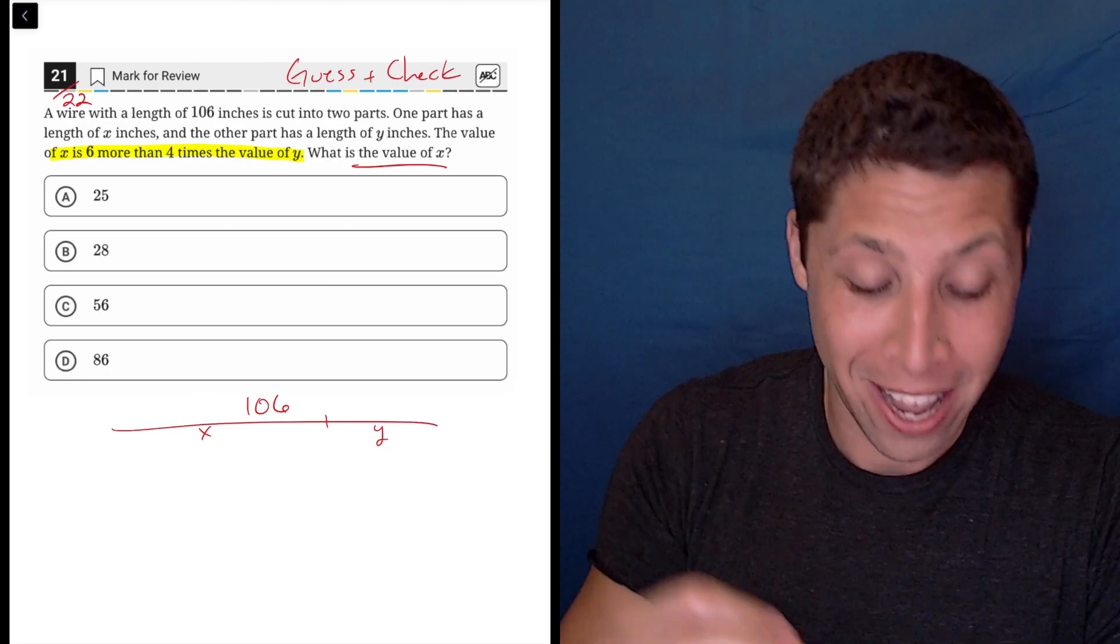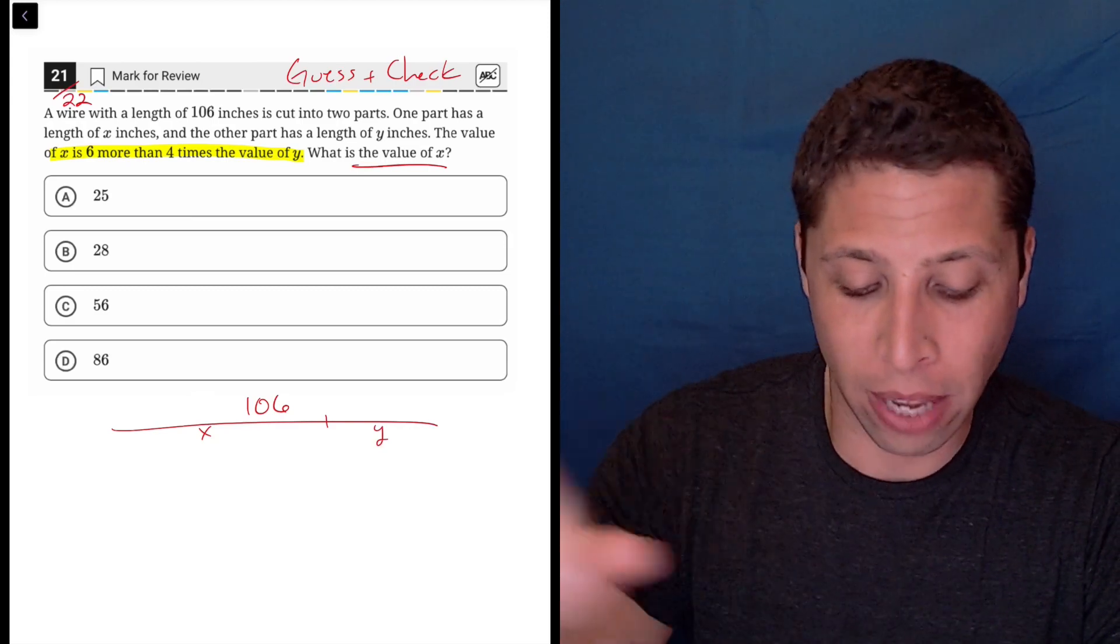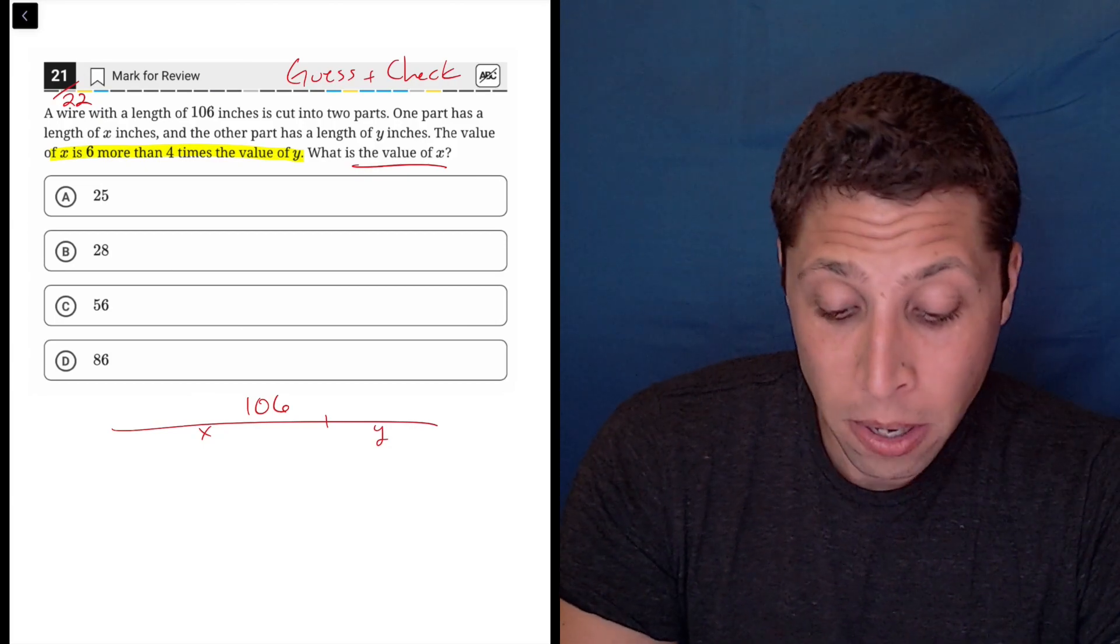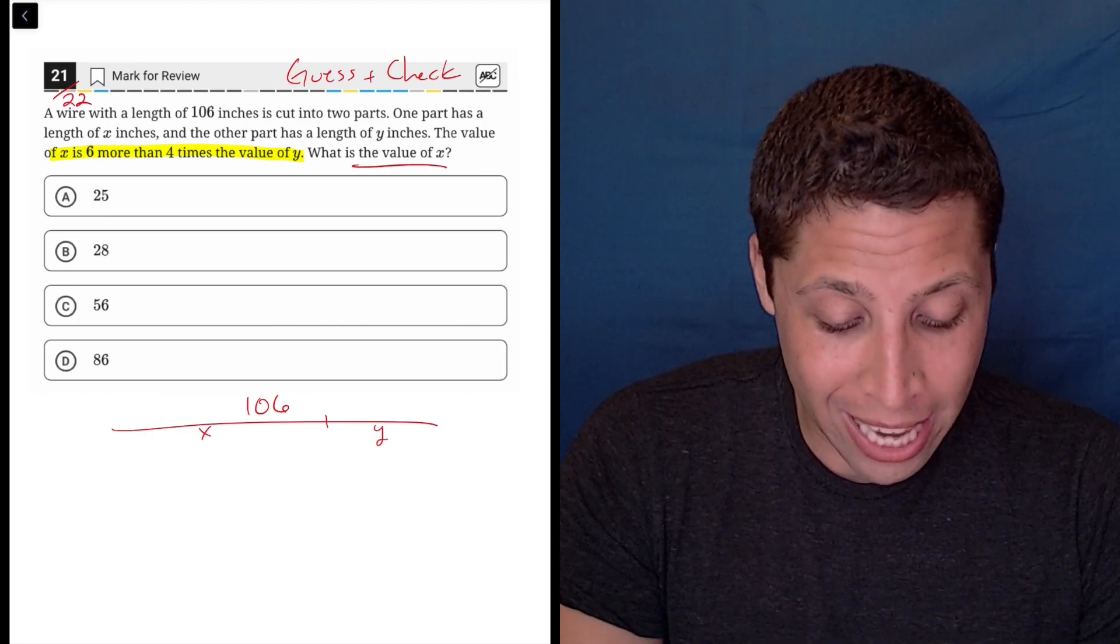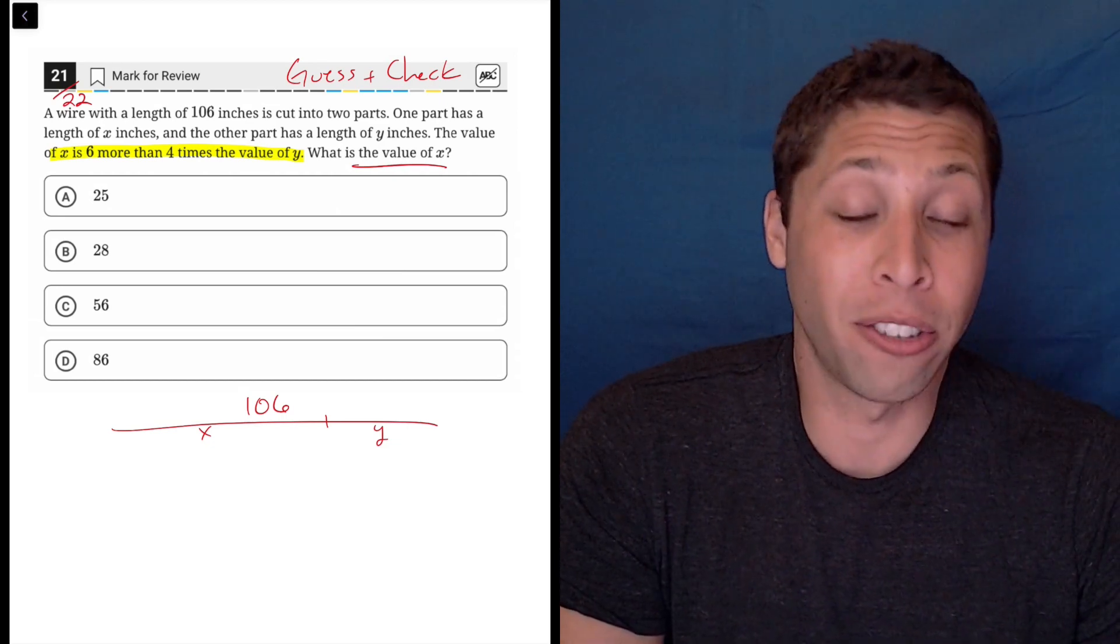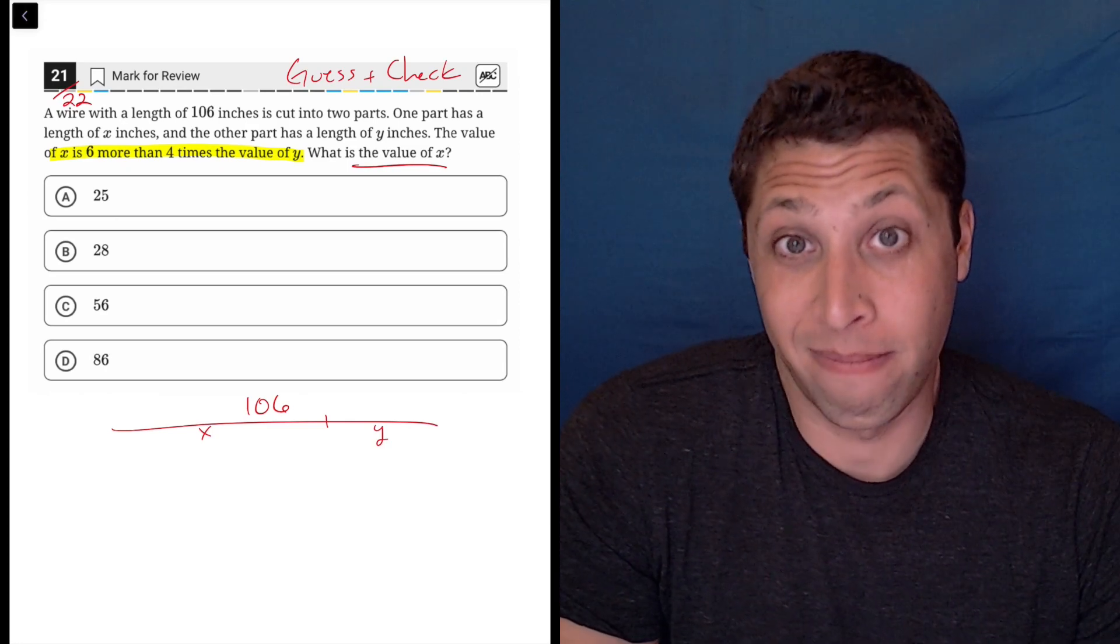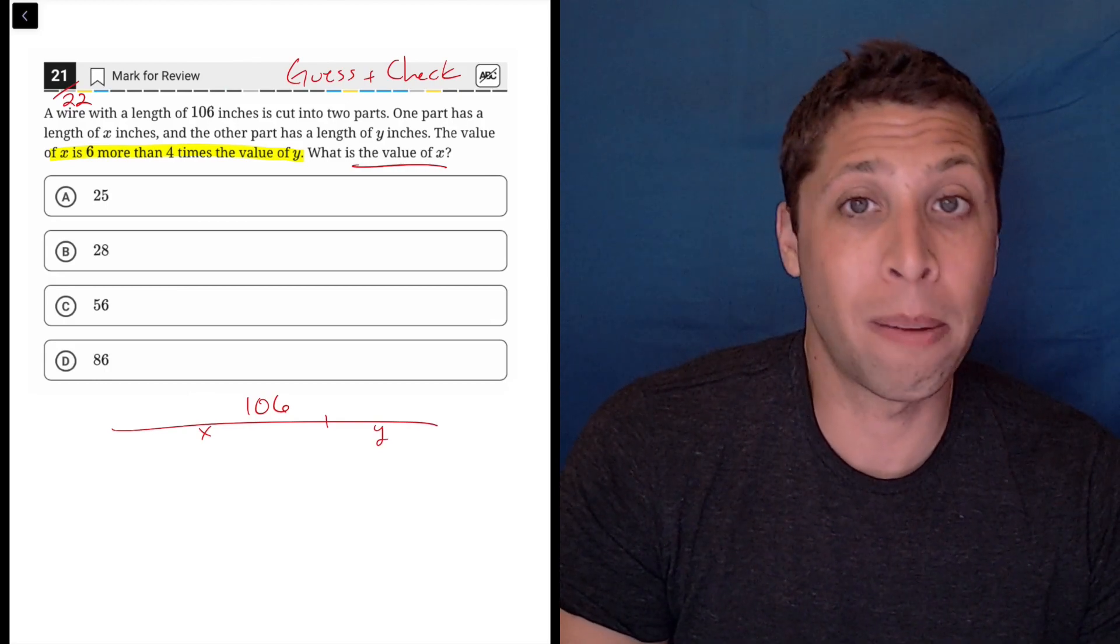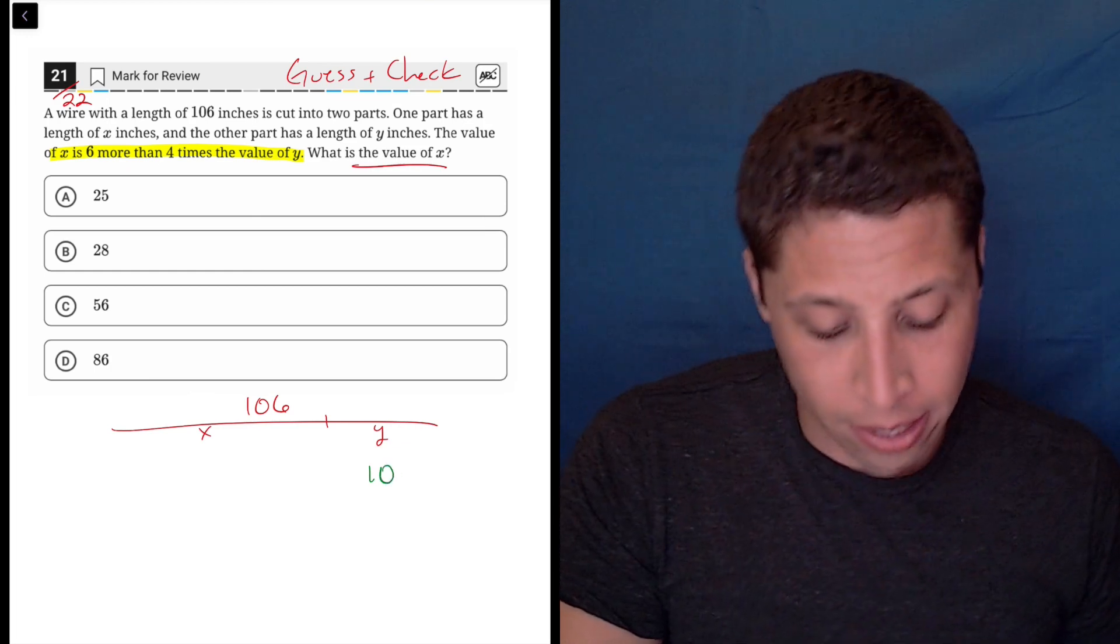I would much prefer if they said, what is the value of Y? Because then I could just take these, plug them in, and then try to be like, okay, four times this then add six. It's much easier to do it that way. So let's do it that way. It's going to require a little faith here because we can't use the answer choices, but we know that the whole thing is 106. There's nothing saying we can't just pick a value for Y anyway, and it doesn't have to be an answer choice. So it's 106 inches. Let's just pick a number that seems smaller that might be easier to work with. Let's just say Y is 10 to start.